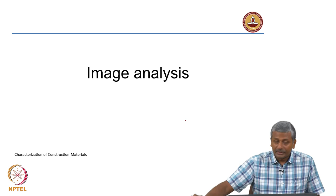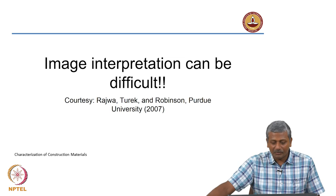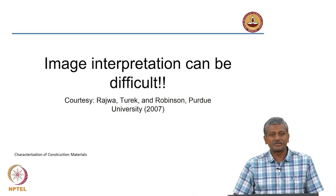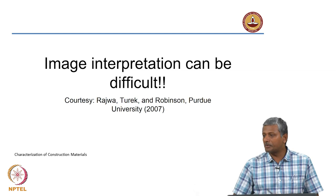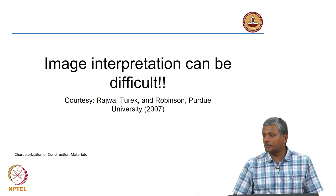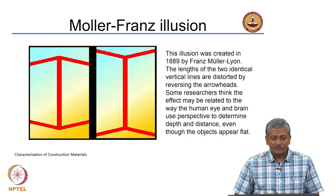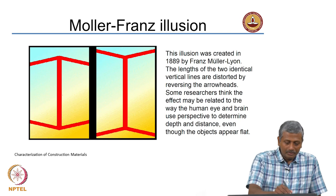To appreciate that image interpretation is not easy, I will show some images collected by researchers at Purdue University, used frequently in their courses on microscopy and image analysis. The first is the Müller-Lyer illusion. Looking at this picture, the two vertical lines may appear to be of different lengths, but in reality both are exactly the same length. This is called the Müller-Lyer illusion.